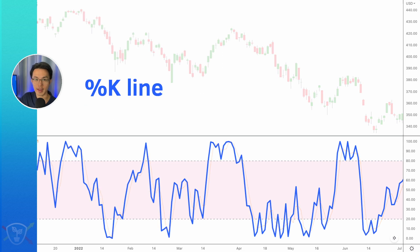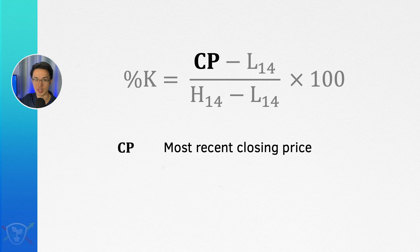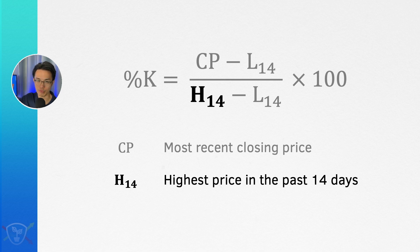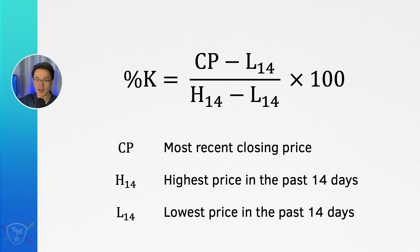We begin with the K line, and this here is the formula for the K line. CP refers to the most recent closing price of the underlying stock. H14 is the highest that the price reached in the last 14 days, or the preceding 14 candles. L14 is the lowest that the price reached in the preceding 14 days. Lastly, multiplying this by 100 basically converts it into a percentage.